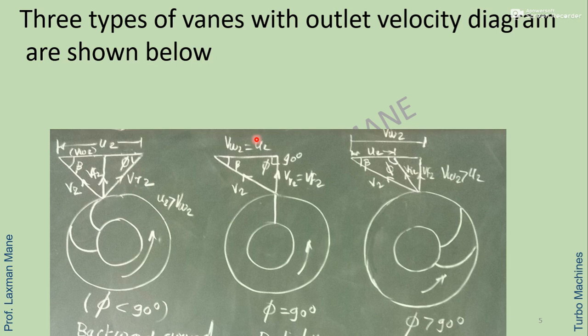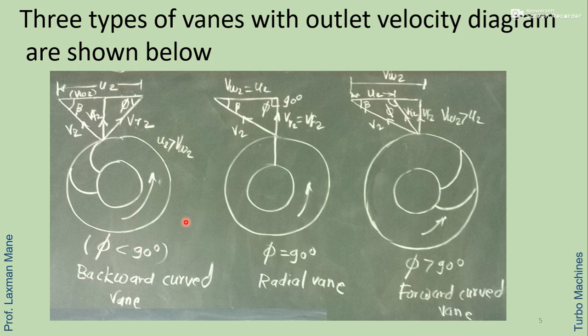These three types of vanes with their outlet velocity diagrams are shown here. For the backward curved vane where phi is less than 90 degrees, the component u2 is greater than vw2. For the radial vane with phi equal to 90 degrees, the whirl component at outlet equals the blade velocity at outlet. For the forward curved vane with phi greater than 90 degrees, vw2 is greater than u2.